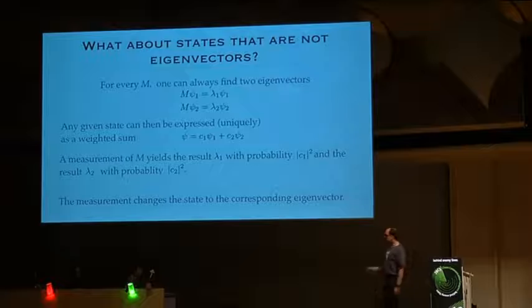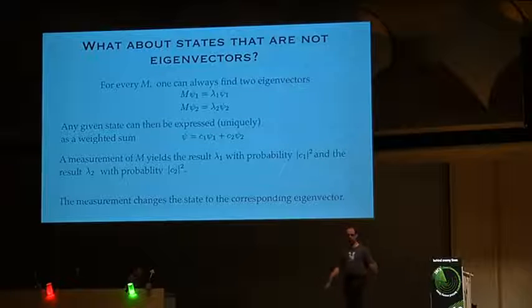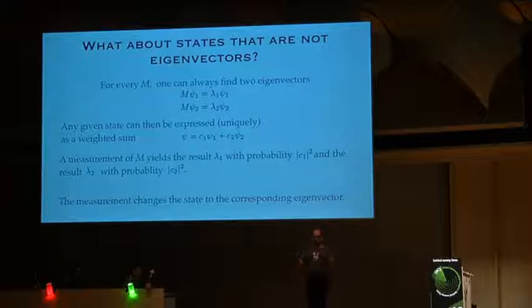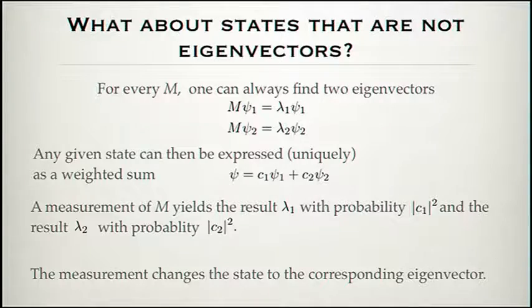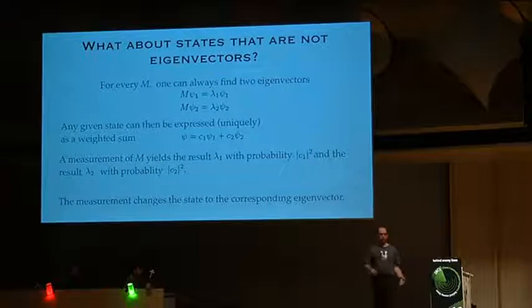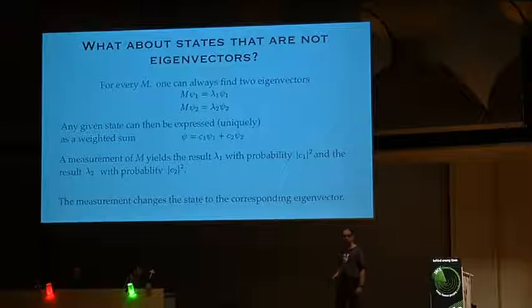When I measure and let's assume I get lambda 1, that's also new in quantum mechanics: the measurement changes the state. I cannot do a passive observation of the system. When I do measurement M and get lambda 1, afterwards the state is changed to psi 1, which corresponds to lambda 1. And if my outcome was lambda 2, after the measurement the state has been changed to psi 2. That is how measurements work in quantum mechanics.